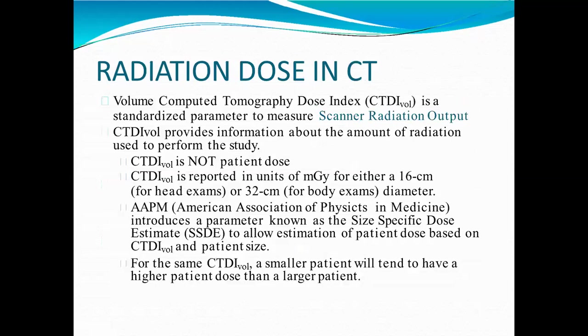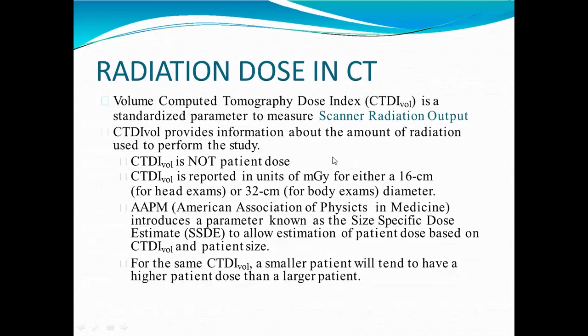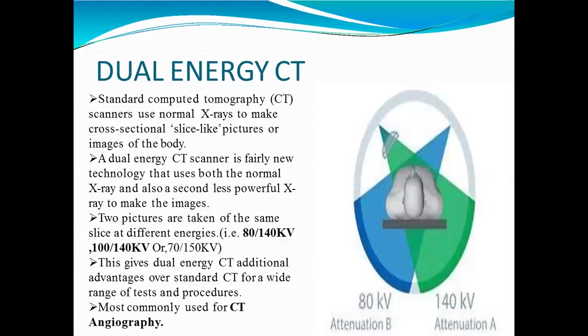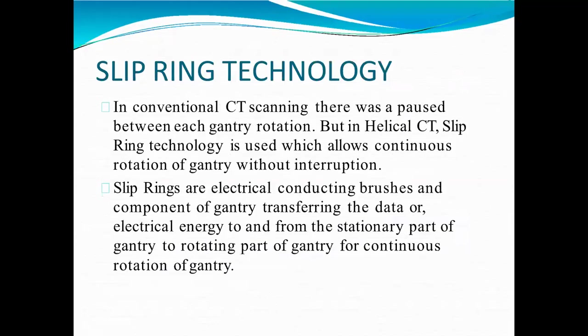The last topic is radiation dose in CT scan. The question is: how many doses do we need to form an image for the patient? We decide parameters for how many doses we need to use. With this, the types of CT scan are: portable, dual energy, dual source, multiple slice, and multiple detector computed tomography, also known as multiple slice computed tomography. You also know about the slip ring technology and how the slip ring works.